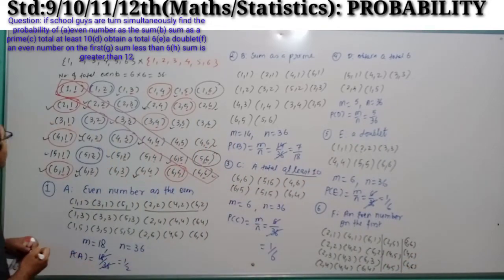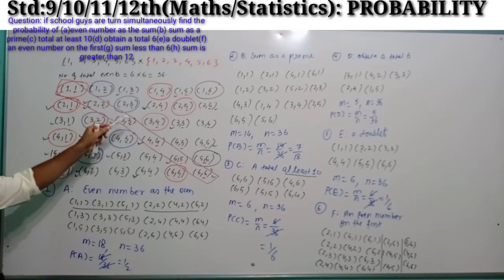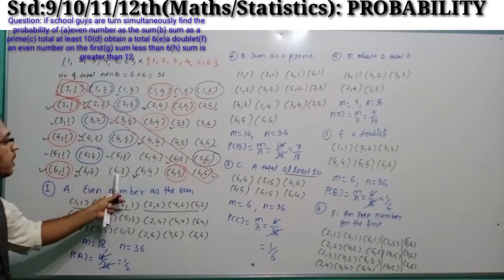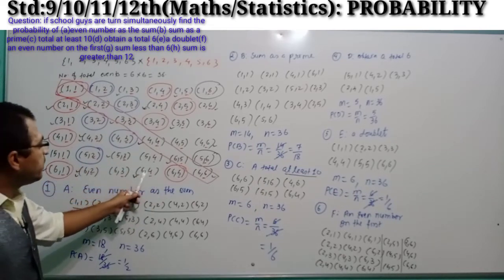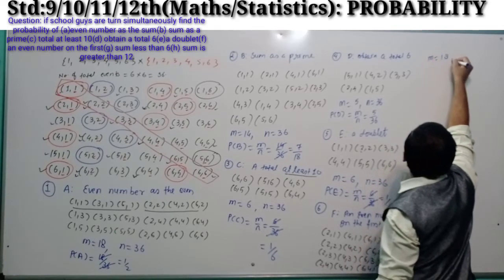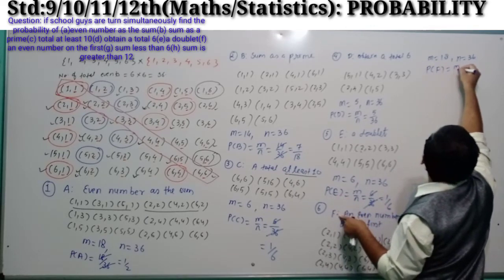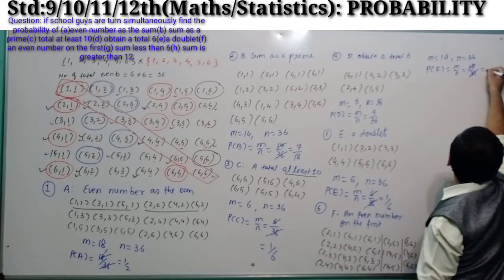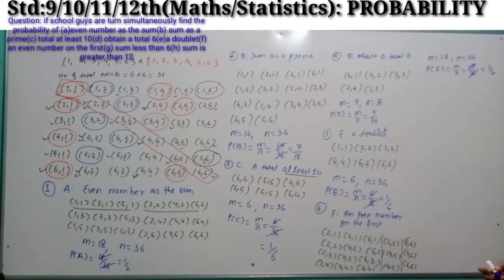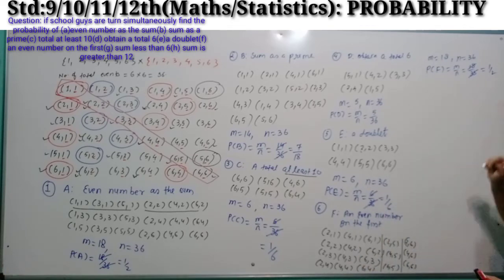From each of the 6 columns we get 3 events: 3+3+3+3+3+3 = 18. So M = 18 and total events N = 36. P(F) = M/N = 18/36 = 1/2. We can conclude that if two dice are thrown simultaneously, the probability of getting an even number on the first die is 1/2.